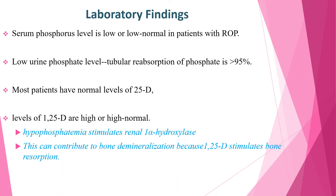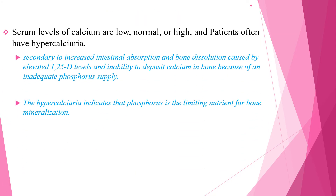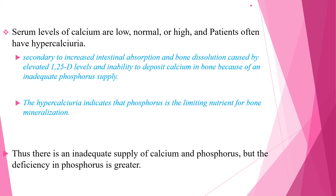Hypophosphatemia stimulates renal 1-alpha hydroxylase, so levels of 1,25-dihydroxyvitamin D are high or high-normal. These high levels can contribute to demineralization because 1,25-dihydroxyvitamin D stimulates bone resorption. Serum levels of calcium are low-normal, normal, or high, and patients often have hypercalciuria. These elevated serum calcium levels and hypercalciuria are secondary to increased intestinal absorption and bone dissolution caused by active vitamin D, and the inability to deposit calcium in bone because of inadequate phosphorus supply. The hypercalciuria indicates that phosphorus is the limiting nutrient for bone mineralization.